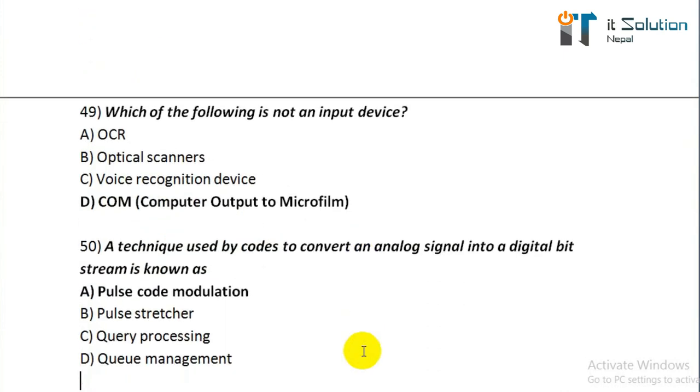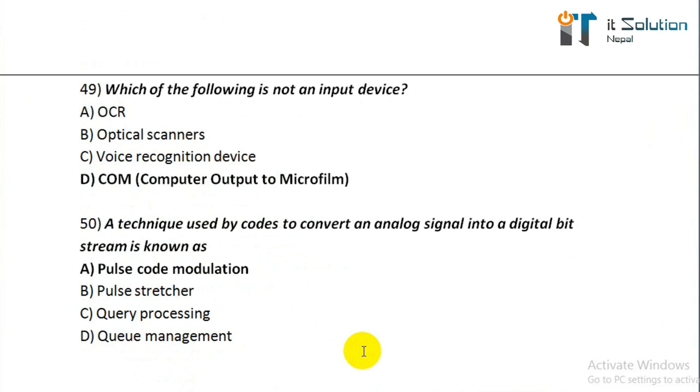Question number fifty: a technique used by a codec to convert an analog signal into digital bits — this is known as option A, pulse-code modulation.